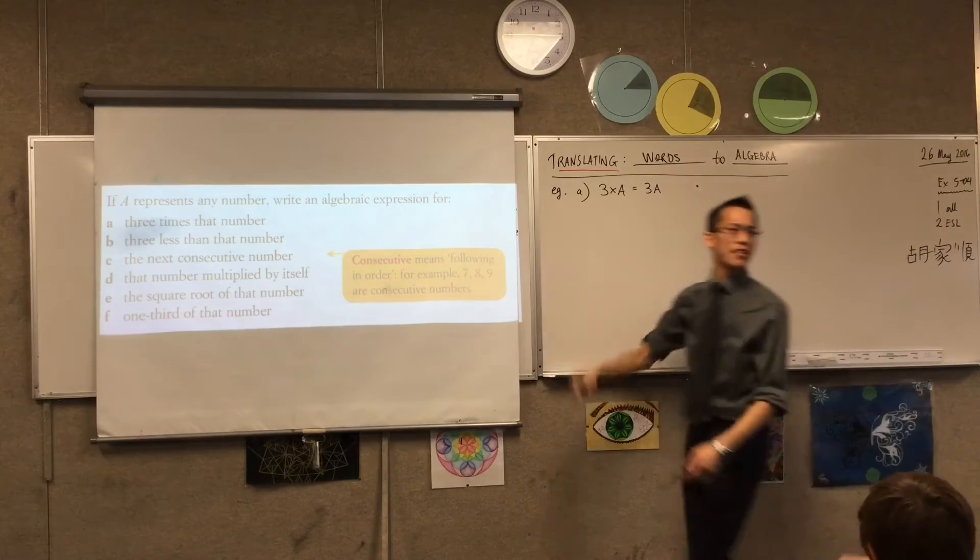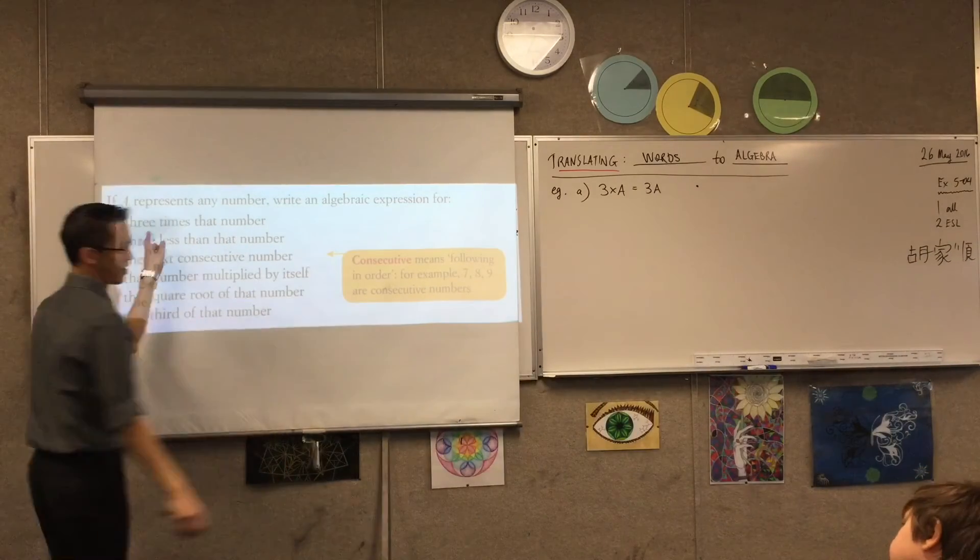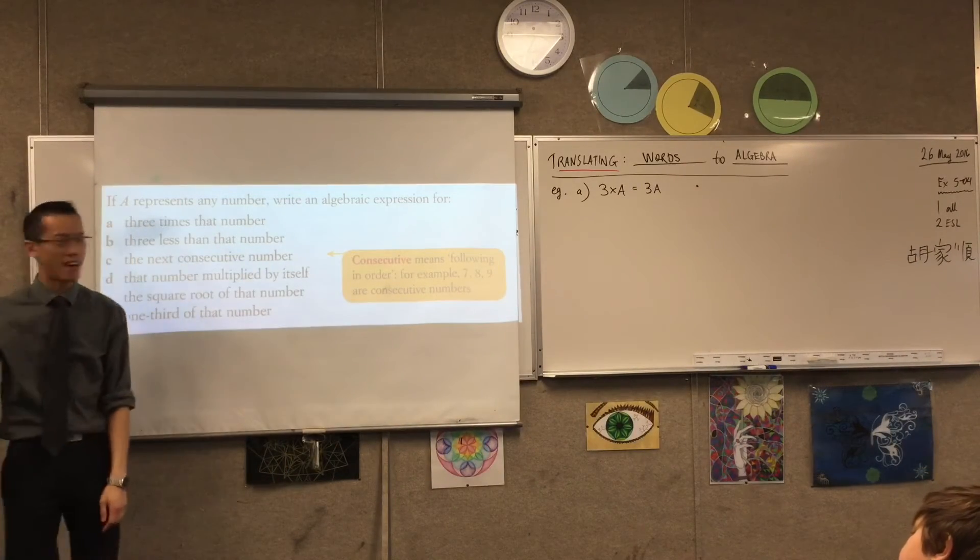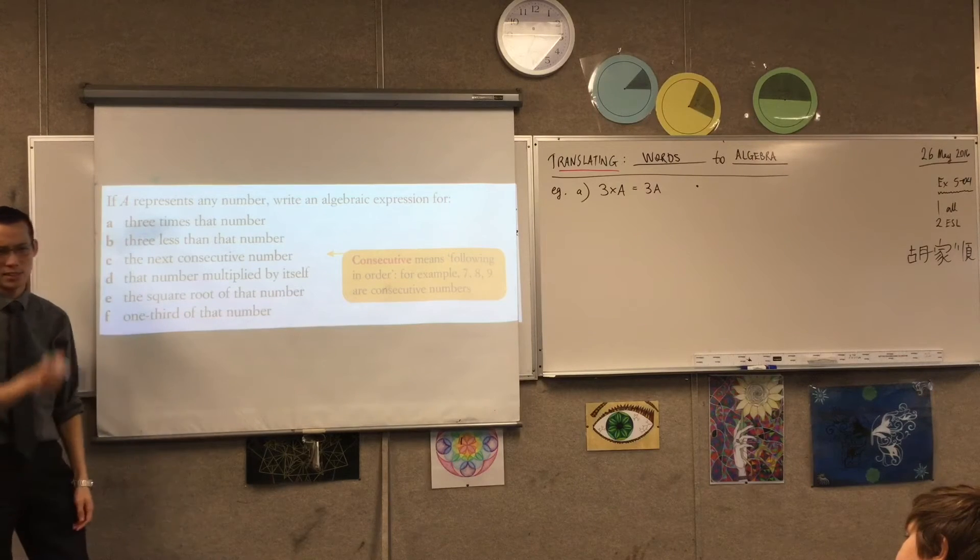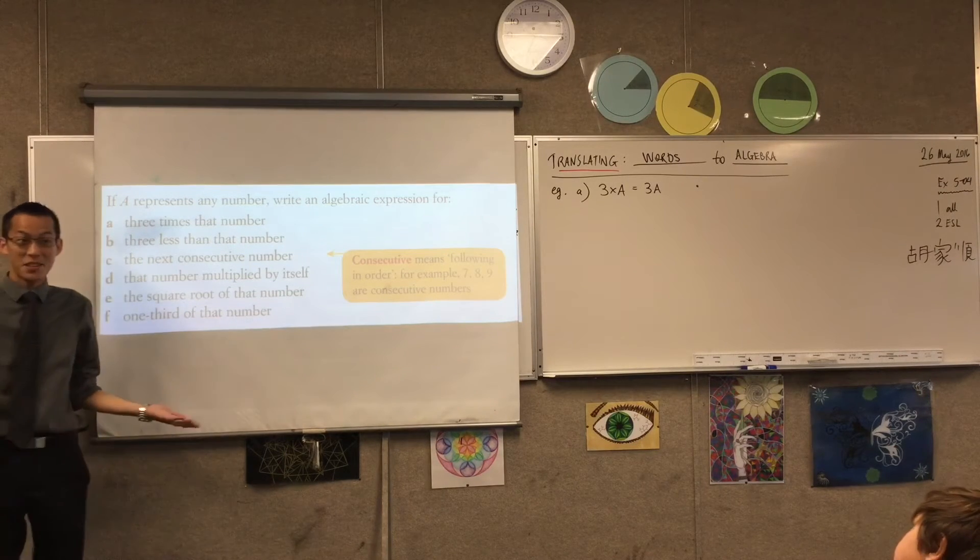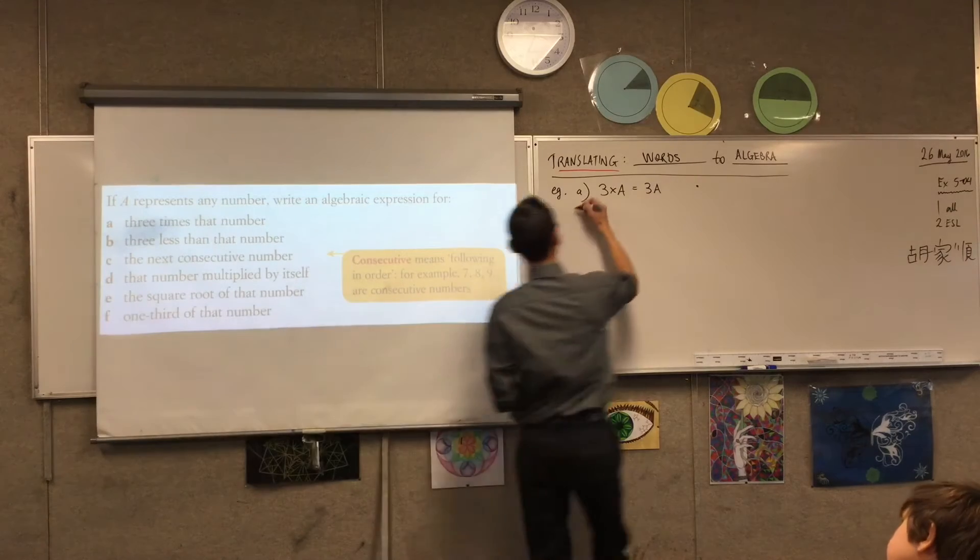This is a lot quicker to write. And so if I want to work with this number, whatever it happens to be, it's going to be much better to write this rather than to constantly say, three times that number, three times that number, and have to write that out. That would take me like a good 15, 20 seconds to write. At least if it was going to be legible for you. Okay, so there you go. That's what three times that number is. Let's have a look at the next one.